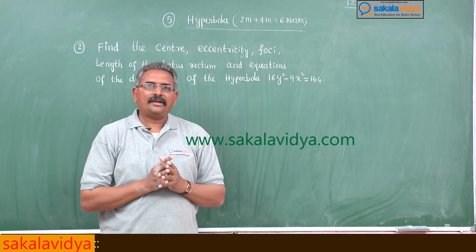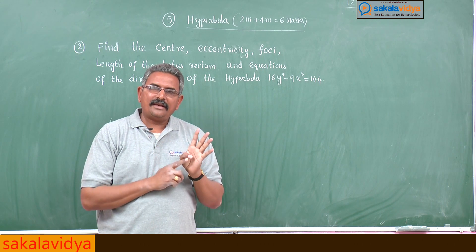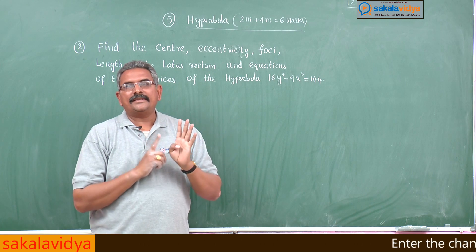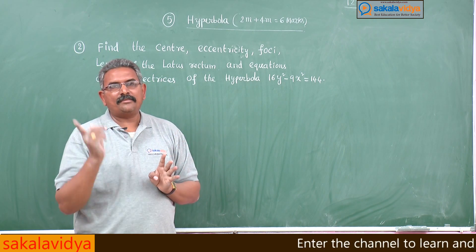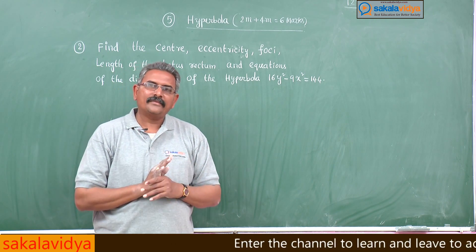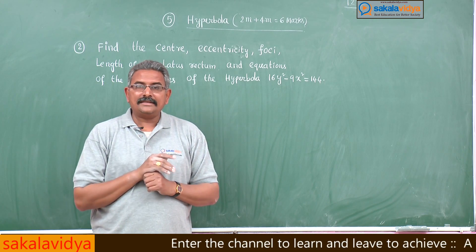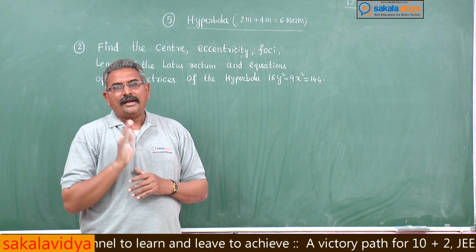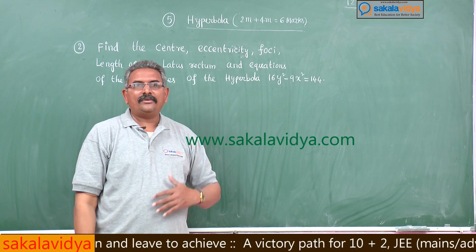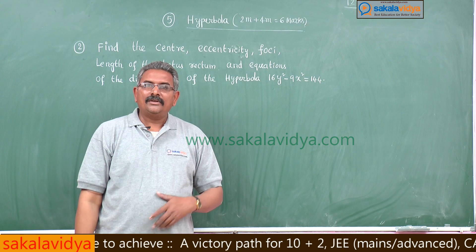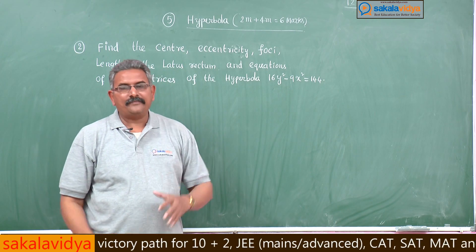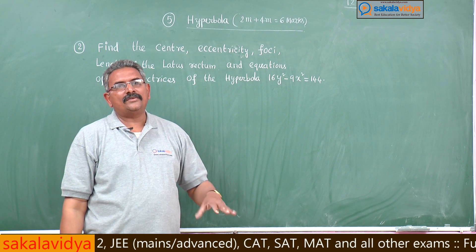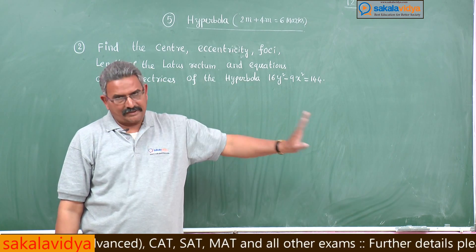If it is given in the second form of the hyperbola, the eccentricity value will change; the center remains the same at (0, 0). The eccentricity formula should be taken as root of (a² + b²) by b². The foci should be taken as (0, ±be). The latus rectum should be taken as 2a² by b, not 2b² by a. The equations of the directrices are y = ±b by e.